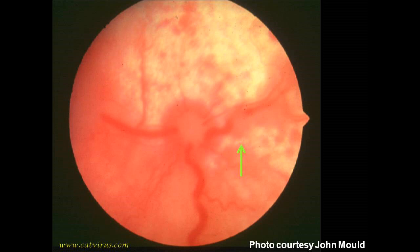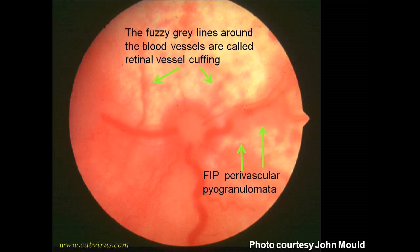Here we have the optic papilla, and if you follow the blood vessel from it going right on your screen, you can see that the vessel actually enters an FIP pyogranuloma and comes out the other side. The eye is one area of the body where you can see the FIP lesions without surgery. This photo is not out of focus — it is hazy because of vitreous flare. Aqueous and vitreous flare are clinical signs you sometimes get in FIP because the pathogenesis involves extravasation of macrophages from the blood vessels.